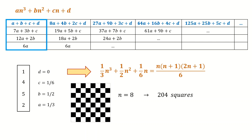For example, if you have n equal to 8, you get 204 squares — that's the total number of squares of all different sizes in a regular chessboard. If you have n equal to 100, meaning a 100 by 100 chessboard, you get 338,350 squares, which is just a matter of seconds to calculate using this formula.